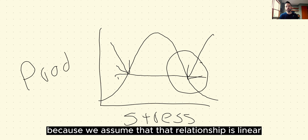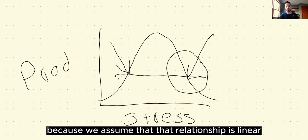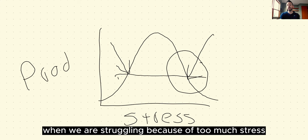And here's the real problem. Because we assume that relationship is linear, because we assume that relationship is that first graph that I drew, when we are struggling because of too much stress, do you know what we do? And what other people do to us?